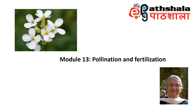Hello everyone. In the earlier modules, we learned how the male and female gametes are formed. The next sporophytic generation starts when the male and female gametes unite to form a zygote. For doing this, the pollen is brought in contact with the stigma through various pollination mechanisms.